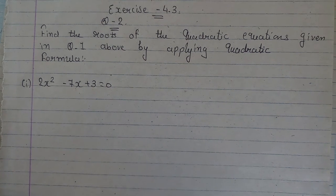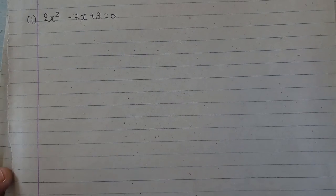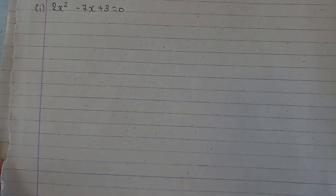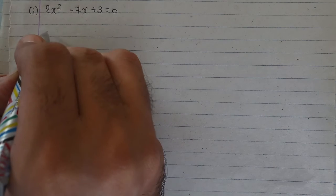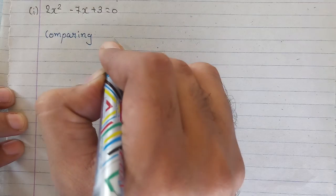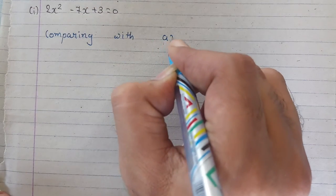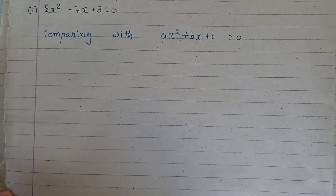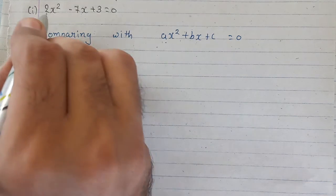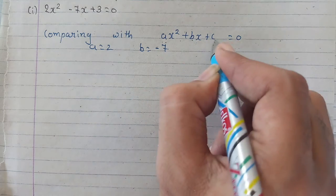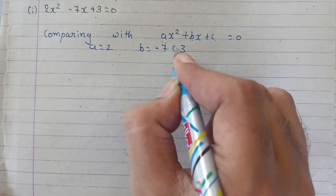How do we use this method? First of all, we will compare on comparing with ax square plus bx plus c is equal to 0. So when we compare it, we will have a as 2, b as minus 7 and c as 3.